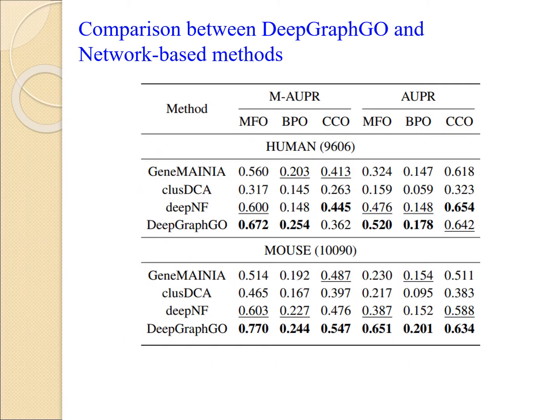The existing network-based methods focus more on the term-centric metric over a specific species. So we compared DeepGraphGO with three most representative network-based methods — GMAI, SDCA, and DeepNF — over human and mouse in both term-centric and protein-centric manners. This table reports that DeepGraphGO achieved the best performance in 10 out of 12 settings.